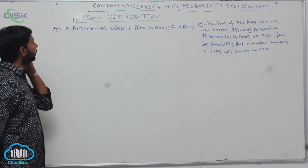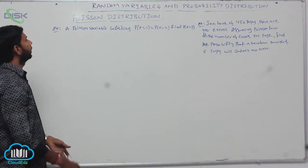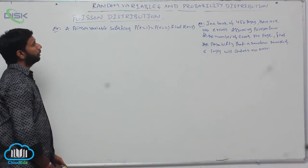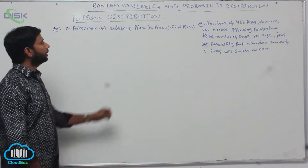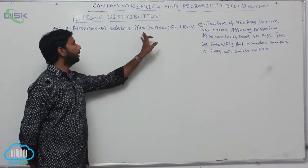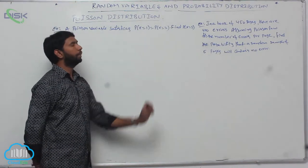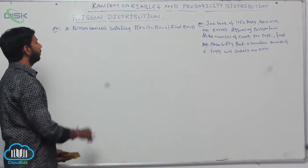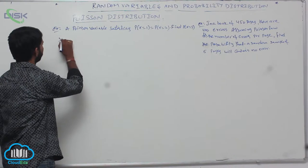Poisson distribution. The first problem: a Poisson variable satisfies P(x=1) = P(x=2). Find P(x=5).